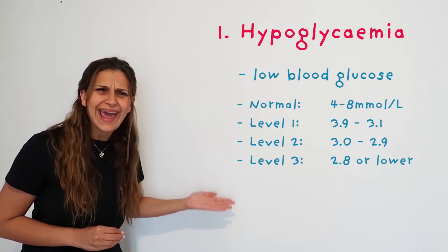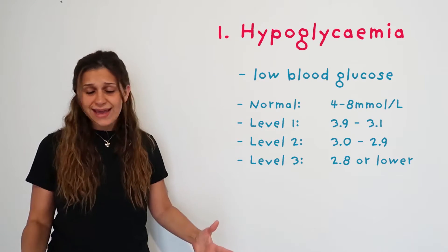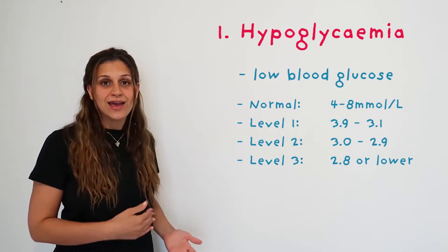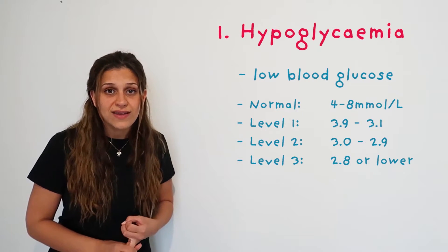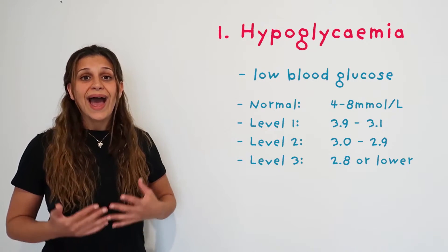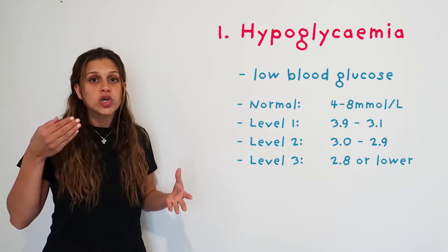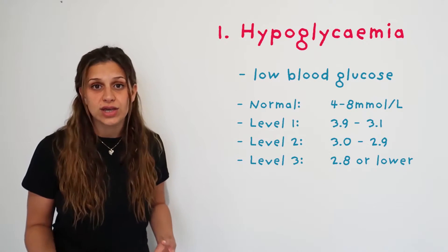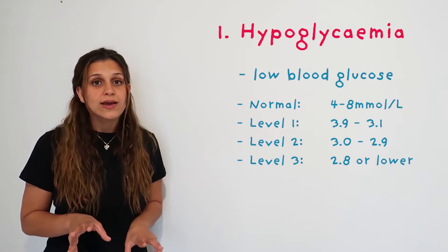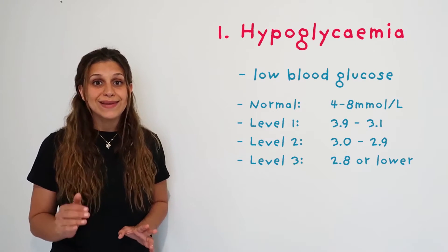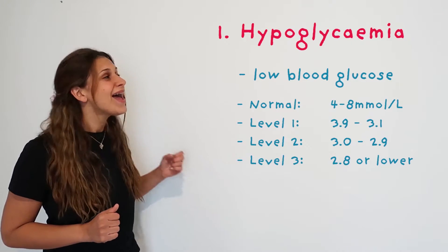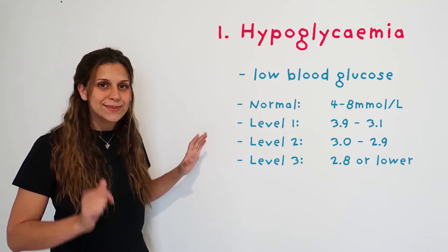Level 3 is less than 2.8 millimoles per liter — this is when you really have to worry. Your patient is unconscious. Right away, put your patient to safety. If they have IV access, give a glucose infusion. In the worst-case scenario you may also have to use a glucagon injection, but be careful — there are contraindications, and some patients cannot take glucagon. Always consult with the medical team and your senior nurses.